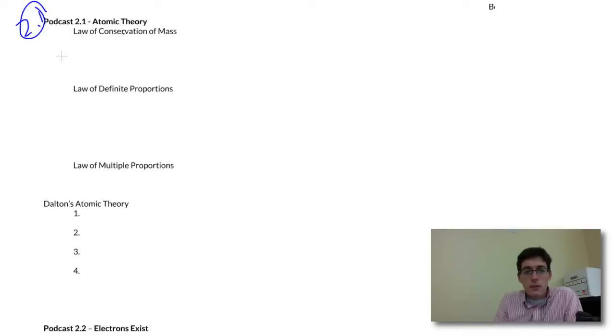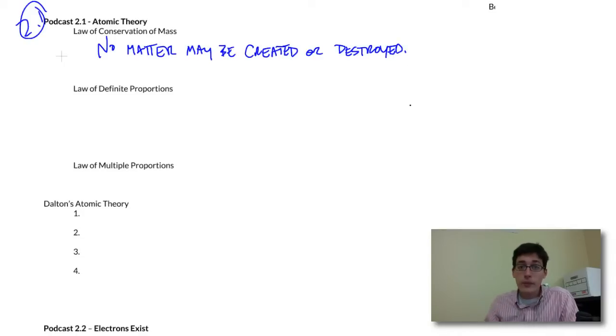The first one is the law of conservation of mass, and this says that no matter may be created or destroyed. Remember, atoms are matter. They are physical things. So we cannot make any out of nothing and we cannot squish them into oblivion. We can't destroy them. They have to go somewhere and they have to come from somewhere. That also means that all the matter in the world today was here when it was formed billions and billions of years ago. It's just been recycled.